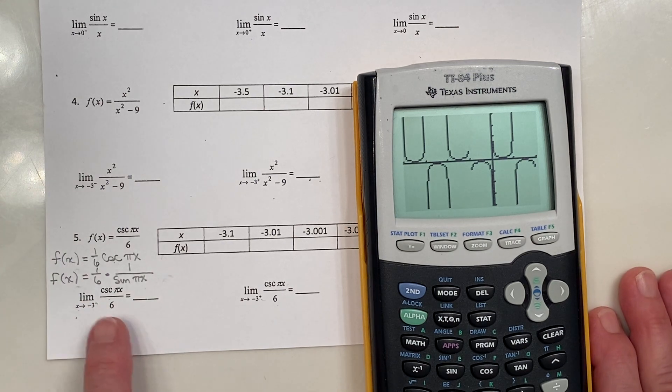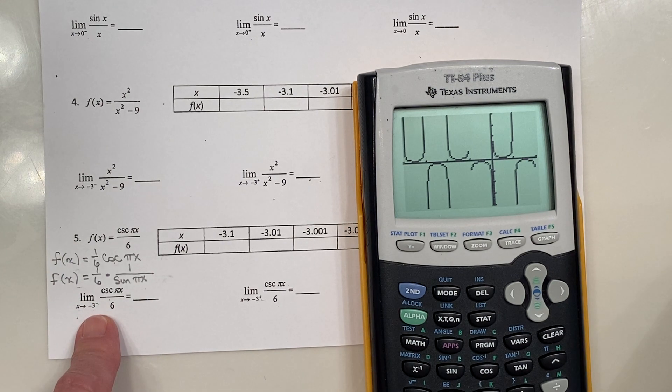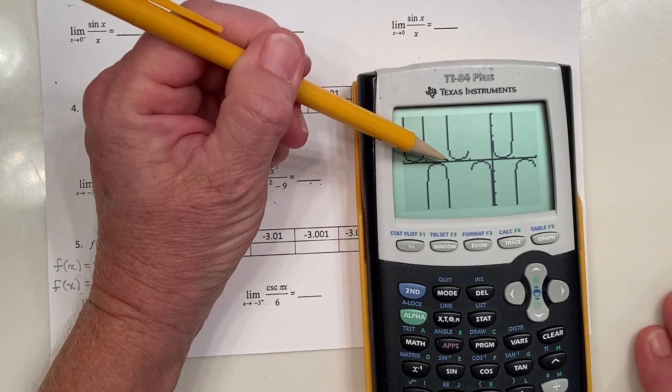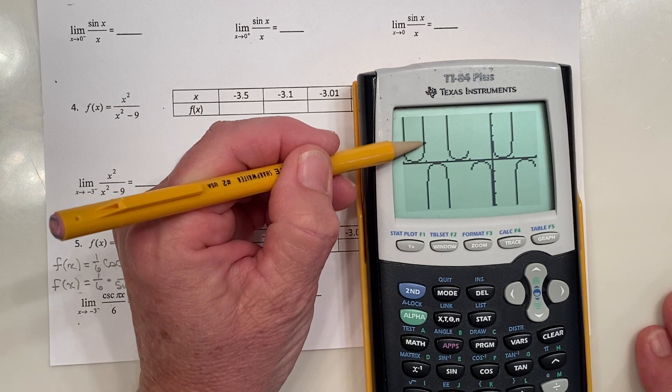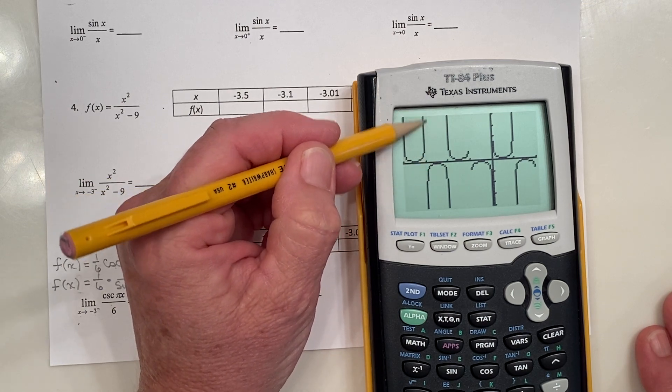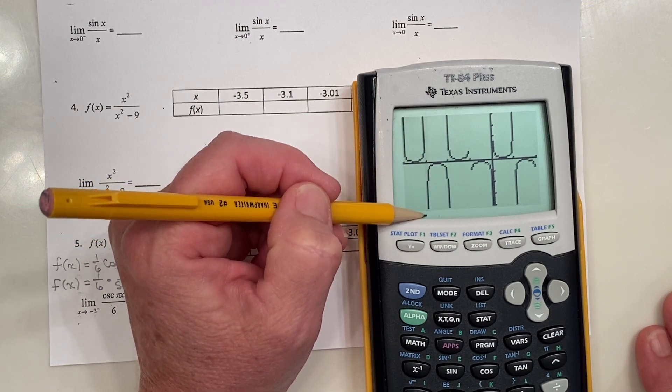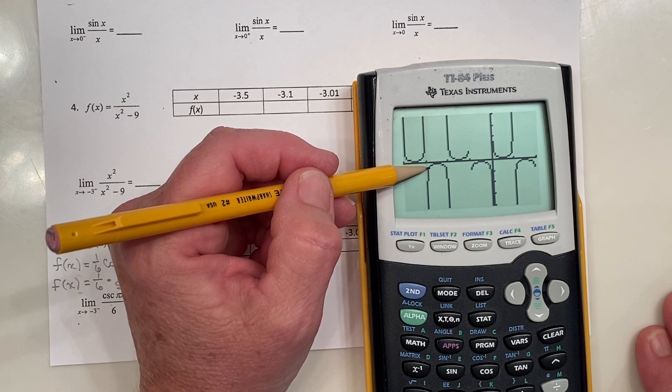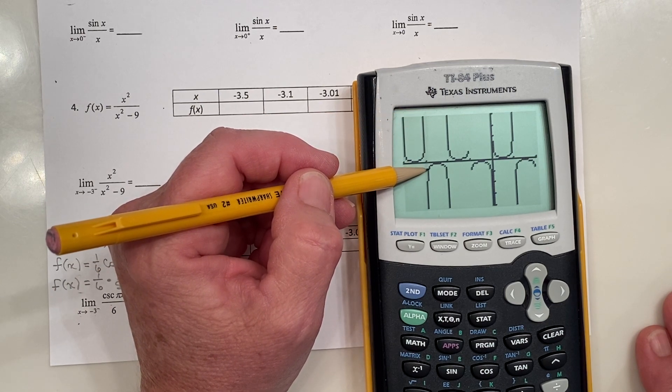All right, so we're interested in the limit as x approaches negative three, so I remember I changed my window, so this is negative one, and this is negative two, and it looks like this must be x equals negative three right here. Looks like there's a vertical asymptote at x equals negative three. I think the limit's not going to exist because of that infinite discontinuity.